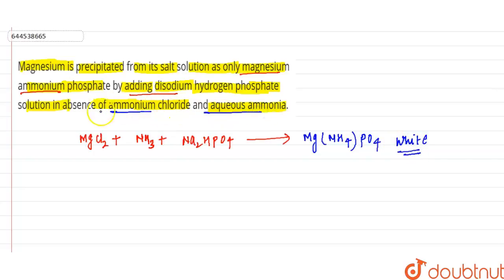Aqueous ammonia and ammonium chloride because it prevents precipitation of Mg(OH)2.